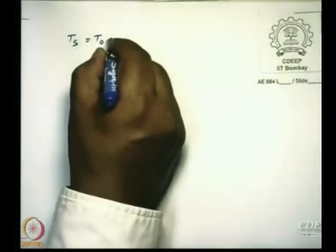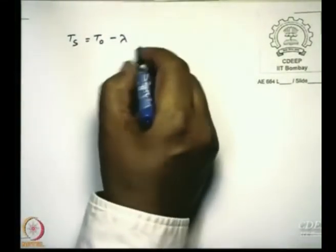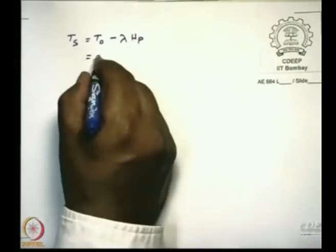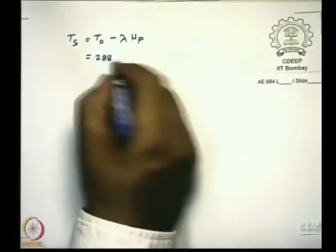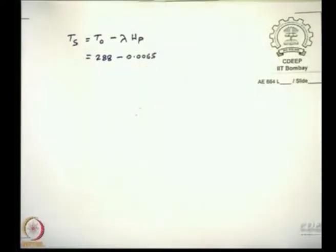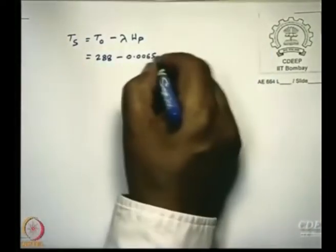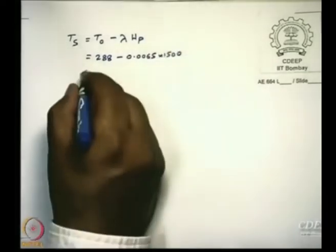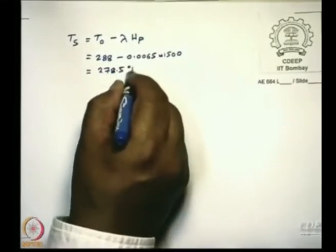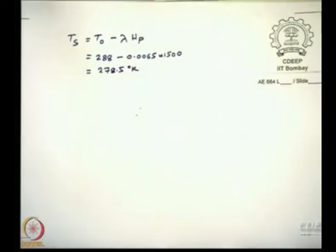So now let us go ahead and solve it. The first thing that we need to understand is that T_S, the ambient air temperature, will be equal to T_0 minus lambda into H_P. This is equal to 288 minus lambda is 0.0065 times 1500. So that means T_S is going to be 278.5 degrees Kelvin. This is the first thing that we have to calculate.